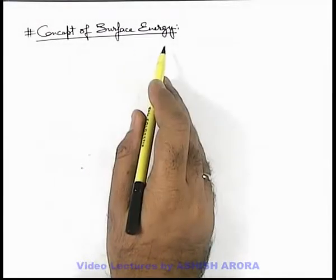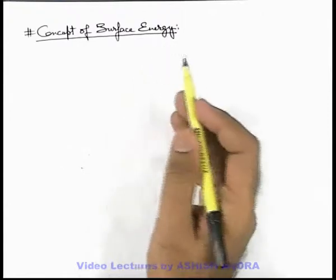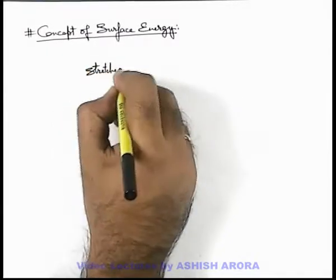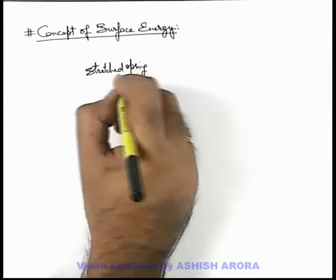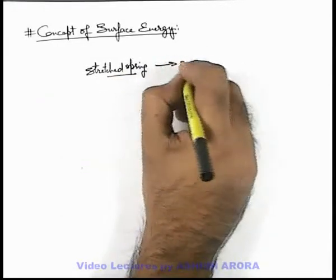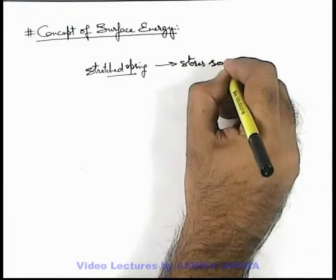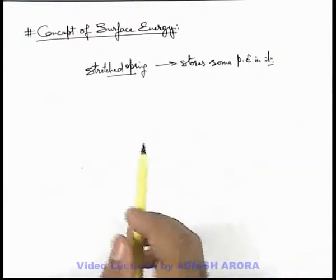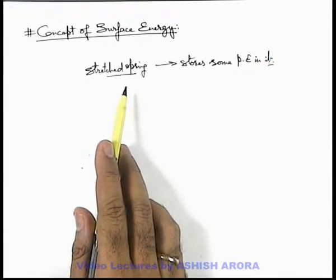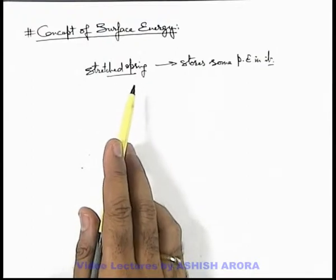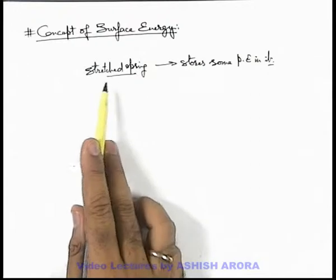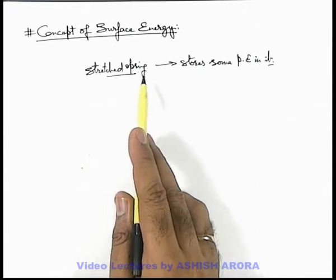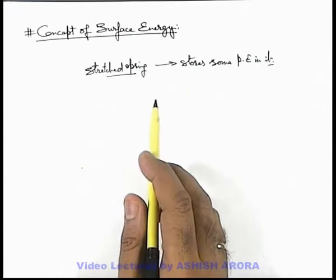Let's discuss the concept of surface energy. As we know about a stretched spring, when we talk about the stretched spring it always stores some potential energy in it. So whenever we talk about an elastic body, if it is in an undeformed state we can say that there is no potential energy in it, but when we talk about its stretched state, whenever we stretch a spring some work is done and that is stored in the form of potential energy, which we term as elastic potential energy.